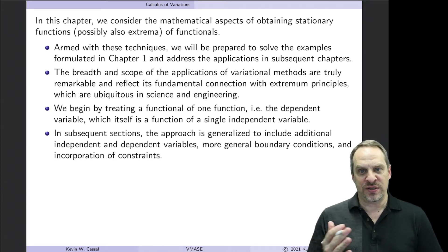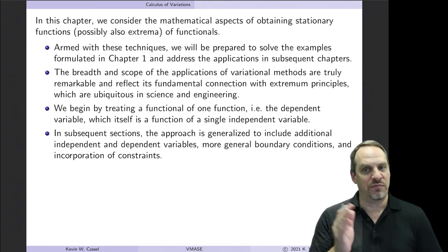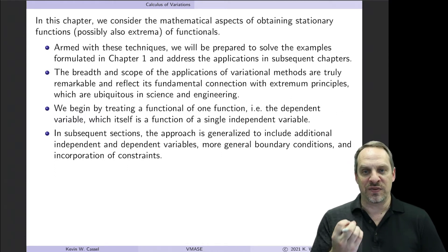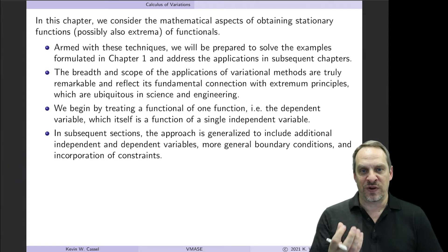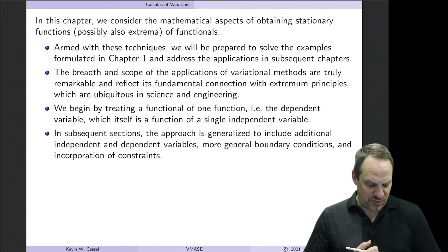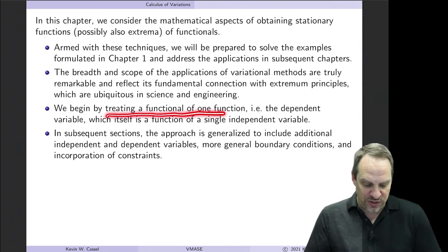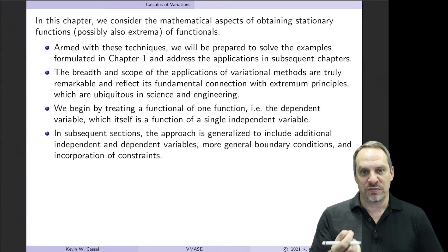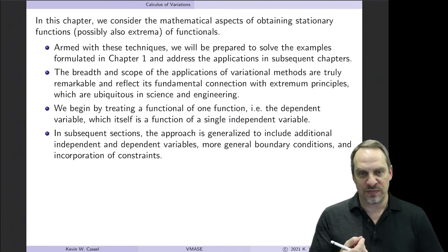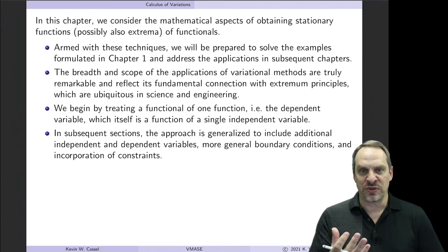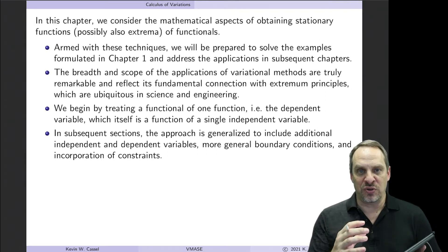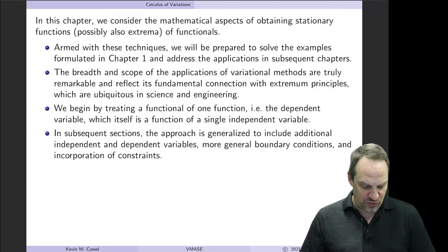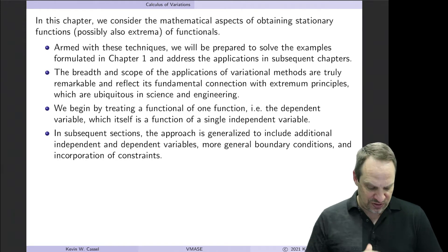We're going to look in this chapter at the mathematical aspects of obtaining stationary functions — or extremums — and once we have these techniques in place, we could go back to chapter one and solve those functionals, determining those shapes and paths that minimize the functionals. The breadth and scope of the applications of variational methods is truly remarkable — from classical mechanics to relativity theory, fluid mechanics, and many other subjects, all encapsulated concisely in a unified variational principle: Hamilton's principle. We'll start by treating a functional of one dependent variable U and one independent variable X, extending later to multi-dimensions, more dependent variables, higher-order derivatives, and constraints.